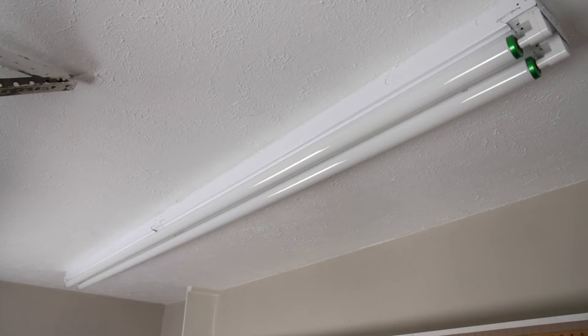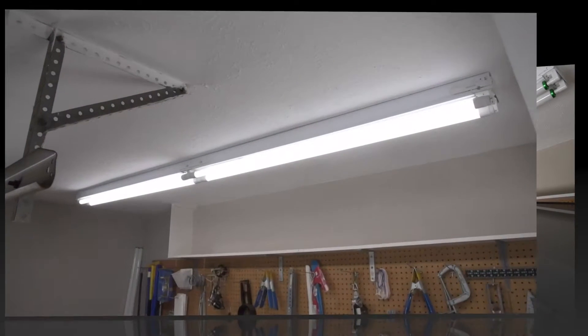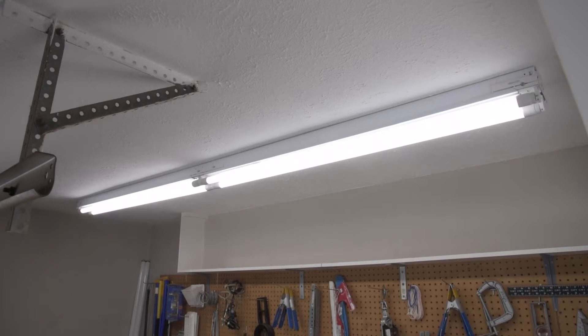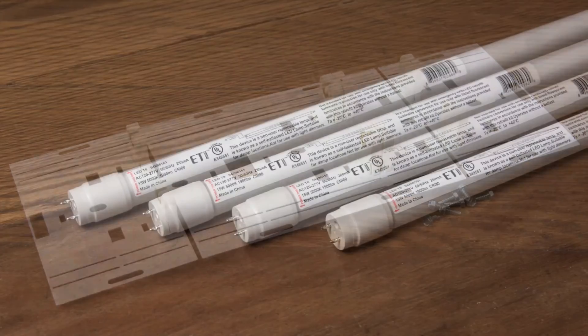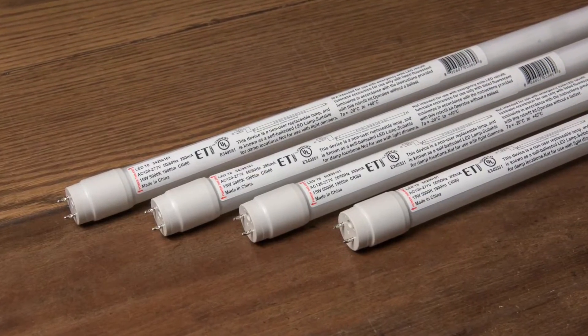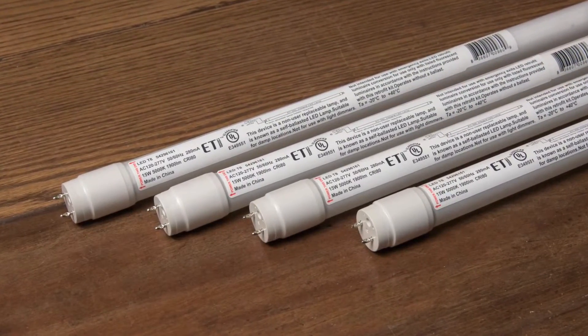This video will show how to easily retrofit an 8-foot fluorescent fixture into an energy-saving LED light fixture using the ETI 4 and 8-foot LED retrofit kit and four 4-foot ETI LED tubes, which are sold separately.